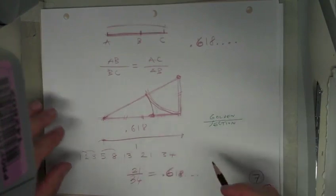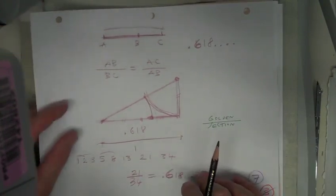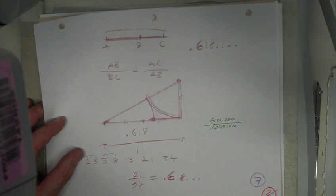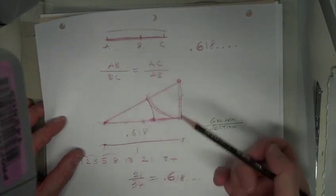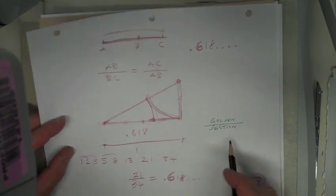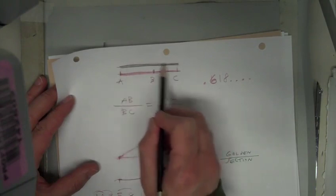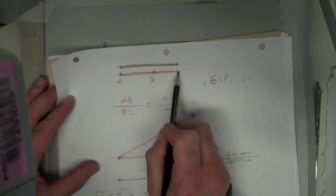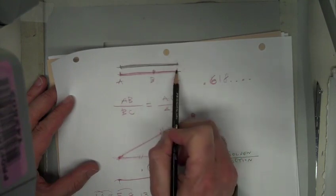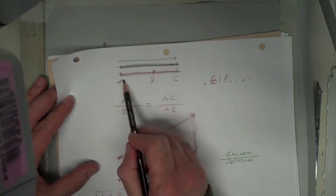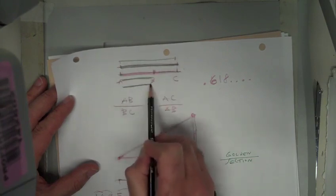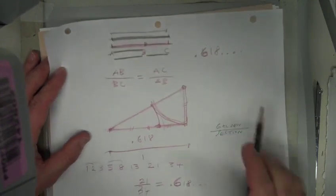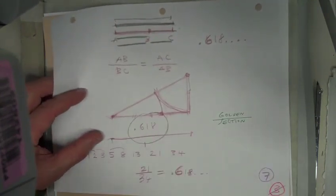As a little aside about the golden section — this is unrelated, but you might find it in some objects or in nature. It's a proportion where the total is to the bigger part as the bigger part is to the smaller part, and that proportion is about 0.618.